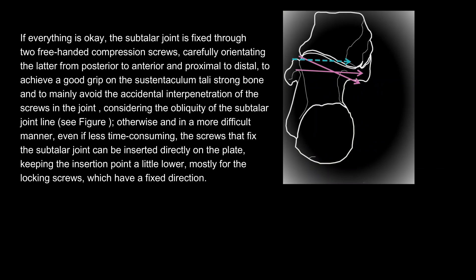If everything is satisfactory, the subtalar joint is fixed through two free-handed compression screws, carefully orientating them from posterior to anterior and proximal to distal, to achieve a good grip on the sustentaculum tali's strong bone and to mainly avoid the accidental interpenetration of the screws in the joint.